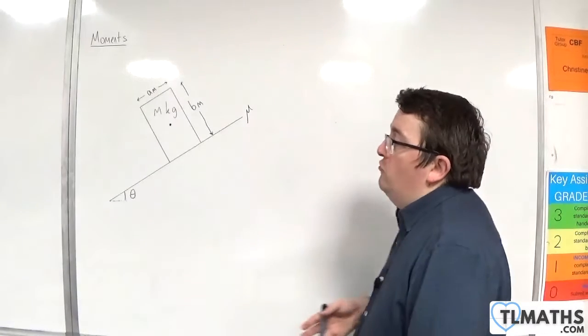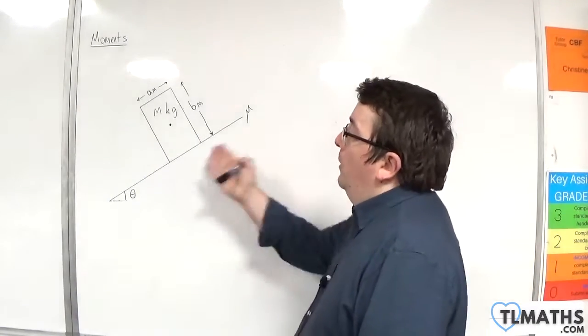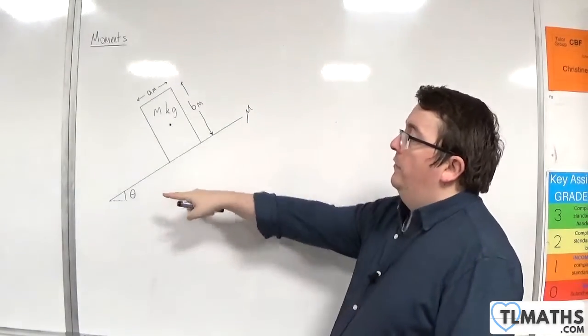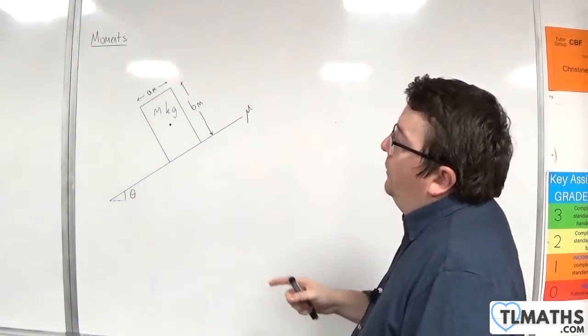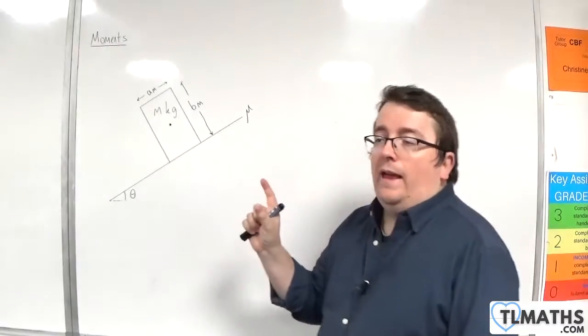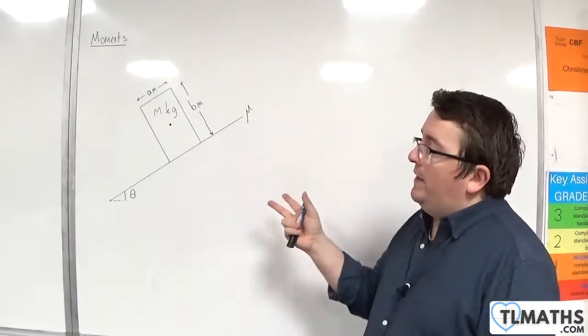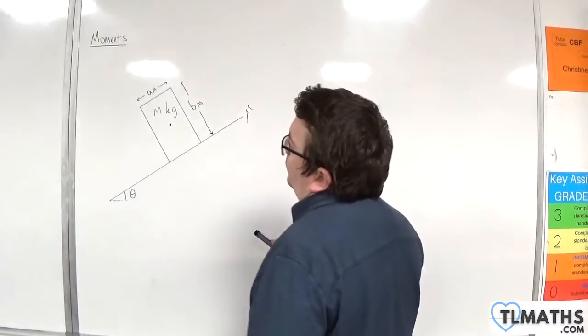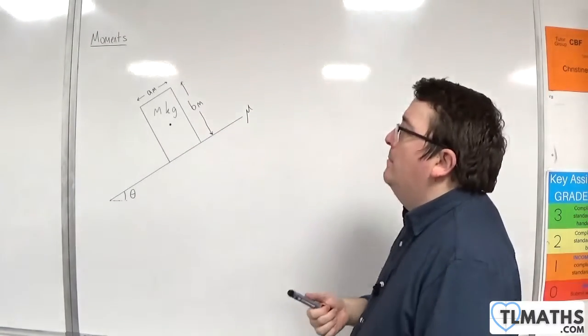In this video I want to look at the general case. We have a block or a box on an inclined plane at an angle of theta. The box is modeled as a rectangular laminar. It has a width of A meters and a height of B meters. It has a mass of m kilos.